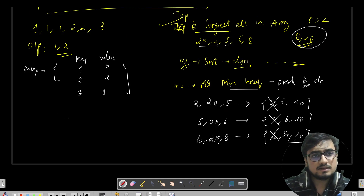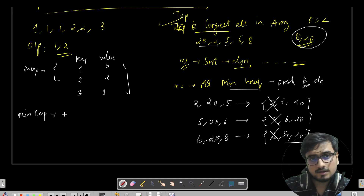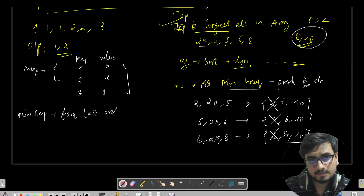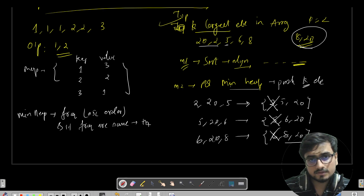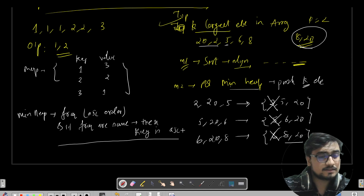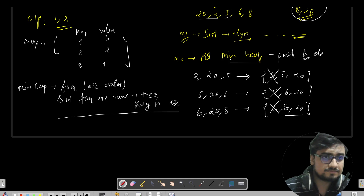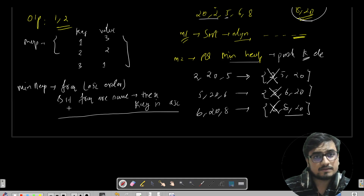The next step is to use a min-heap where the criteria is: frequencies should be in ascending order, and if frequencies are the same, keys should also be in ascending order. So the min-heap ensures entries are ordered with frequency in ascending order.